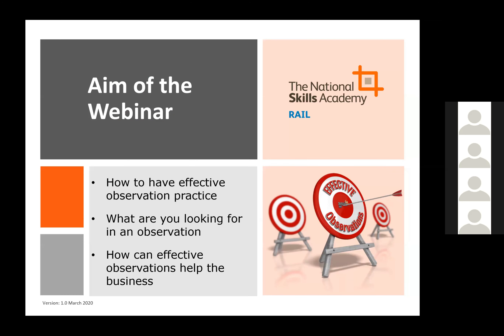Briefly looking back at the aims of the webinar: we've talked about effective observation practices — learning walks and formal observations — and what RTAS asks of you. We've discussed what we're looking for in an observation, both as an observer and what we expect from trainers. Hopefully, observers on this webinar can now see the sort of things to be looking out for, and if you're a trainer you've been able to see exactly what observers should be looking for and how you can reach gold standard. Lastly, we've talked about how these observations really help your business, which should only increase things for yourselves.